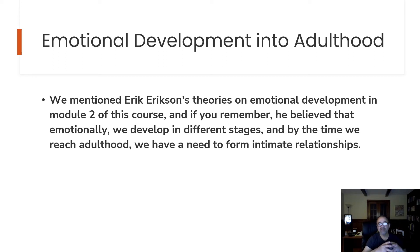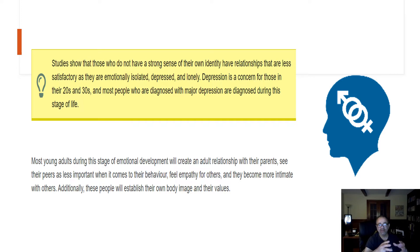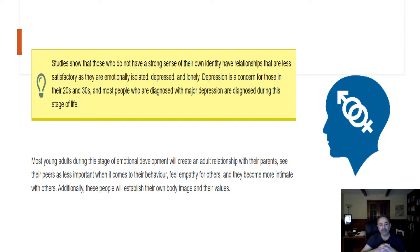By the time we reach adulthood, we have a need to form intimate relationships. Studies have shown that those who do not have a strong sense of their own identity have relationships that are less satisfactory, or they are emotionally isolated, depressed, or lonely. Depression is a concern for those in their mid-20s, and most people who are diagnosed with major depression are diagnosed during this stage of life, from 20 to 30 years of age. Most young adults will create adult relationships with their parents, see peers as less important, feel empathy for others, become more intimate, and establish their own body image and values.